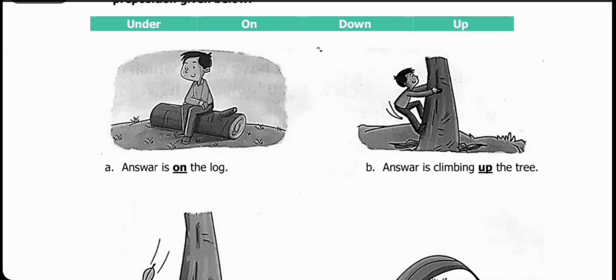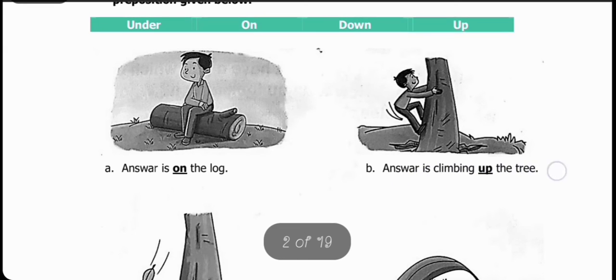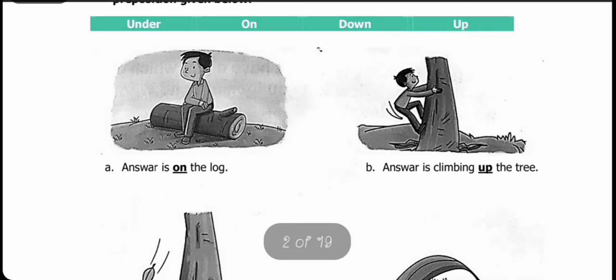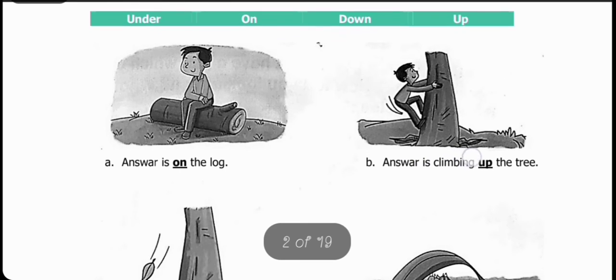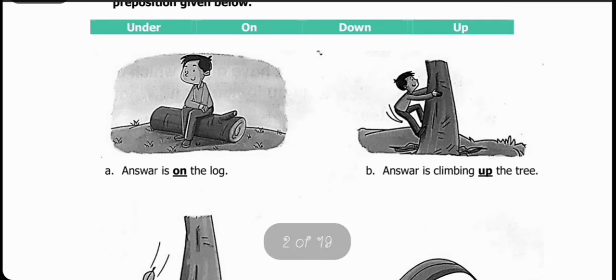Statement D, see. Anwar is climbing blank the tree. Anwar is climbing the tree, students. He is going up. So which preposition word will we use here? Up. Anwar is climbing up the tree. Anwar darakht ke upar char raha hai.